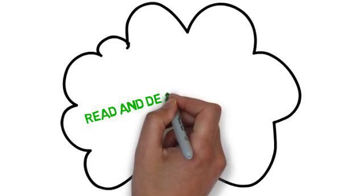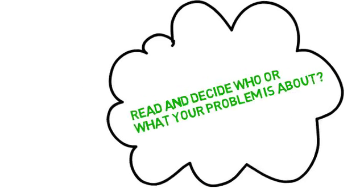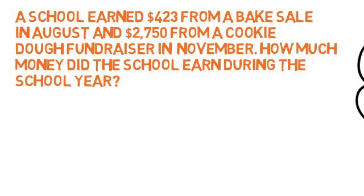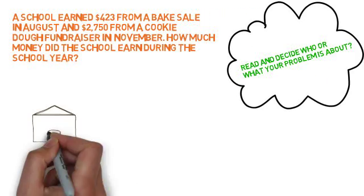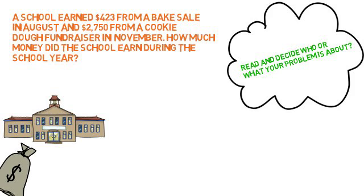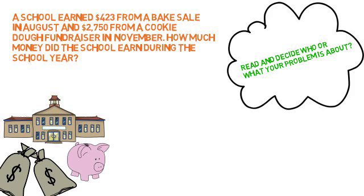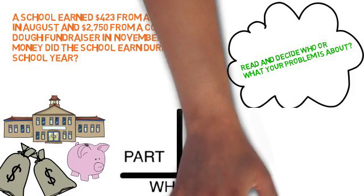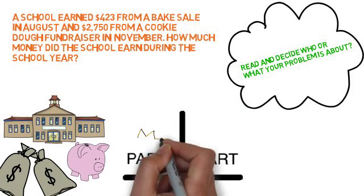The first thing you need to do is read your problem and decide what it's all about. Our problem for today is: A school earned $423 from a bake sale in August and $2,750 from a cookie dough fundraiser in November. How much money did the school earn during the school year? In this problem, we can decide that it's all about a school's money. The next thing is to decide whether your numbers represent a part of the school's money or all of the school's money.